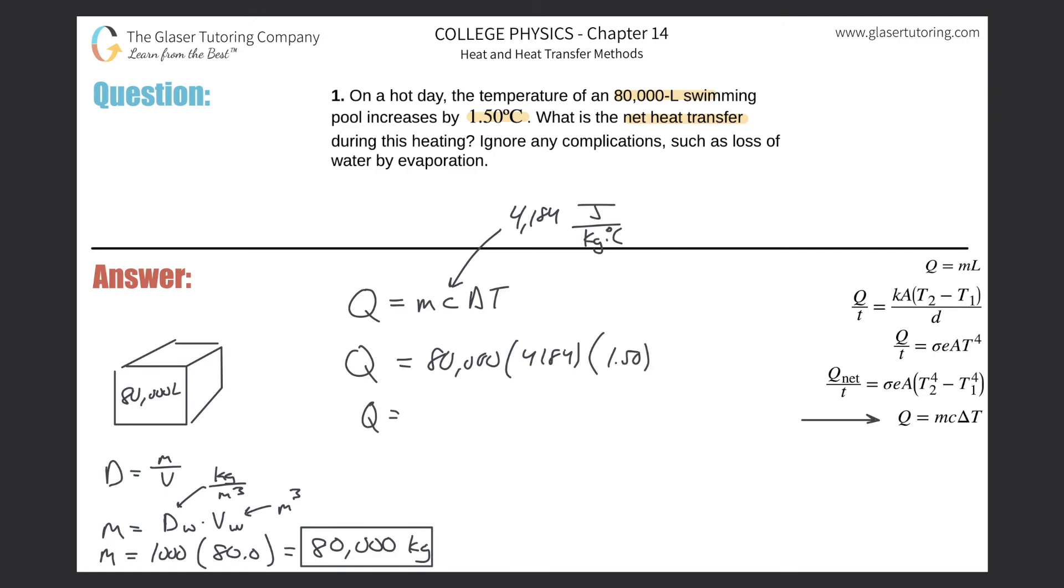Q will work out to be 80,000 times 4,184 multiplied by 1.5, and we have a value here, quite a large value, of 5.02 multiplied by 10 raised to the eighth. That again is in joules, so that is the amount of heat gained by the water.